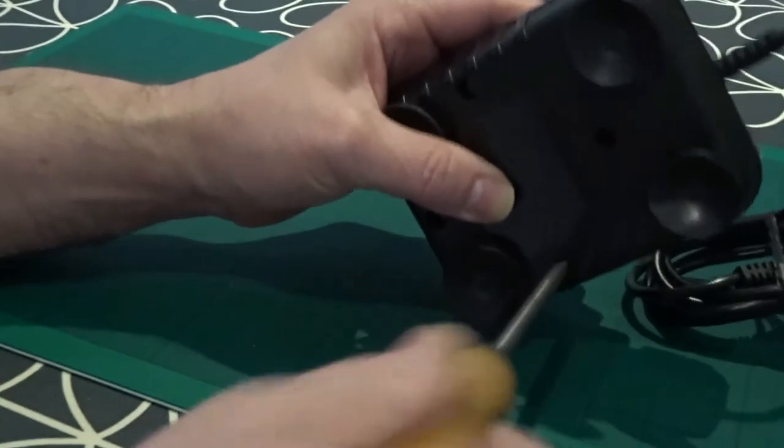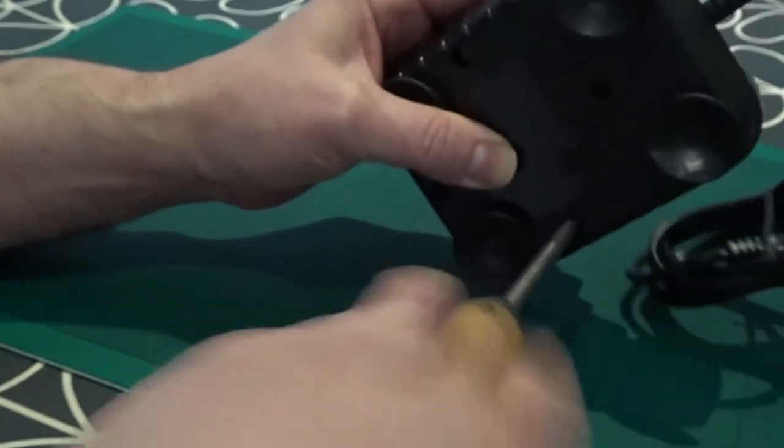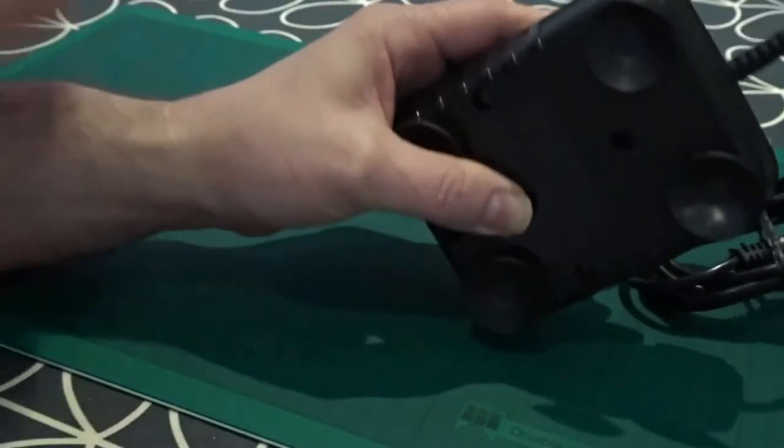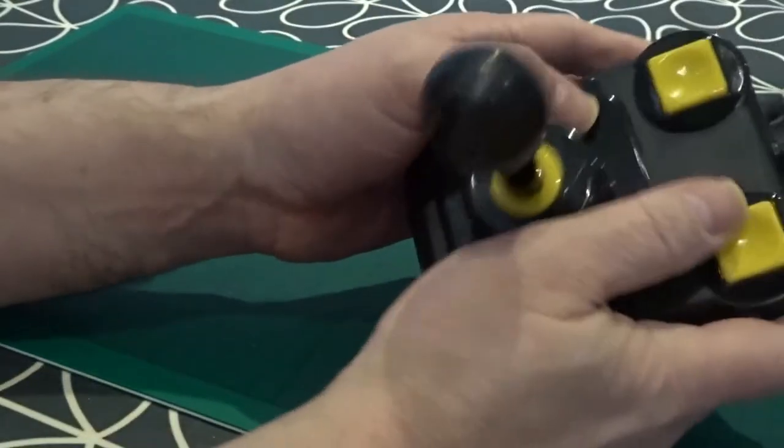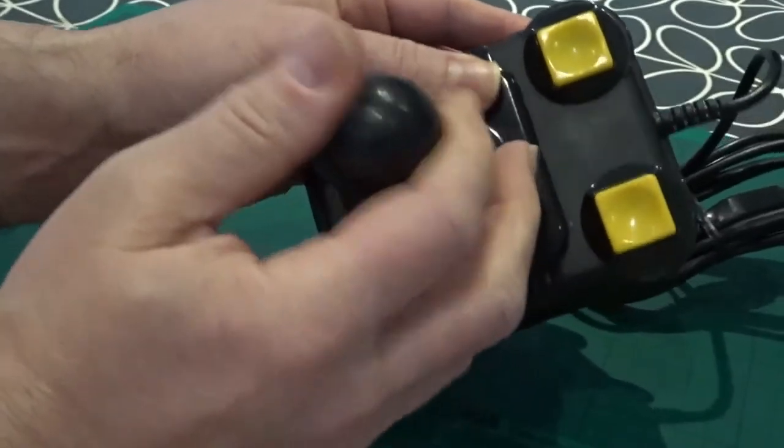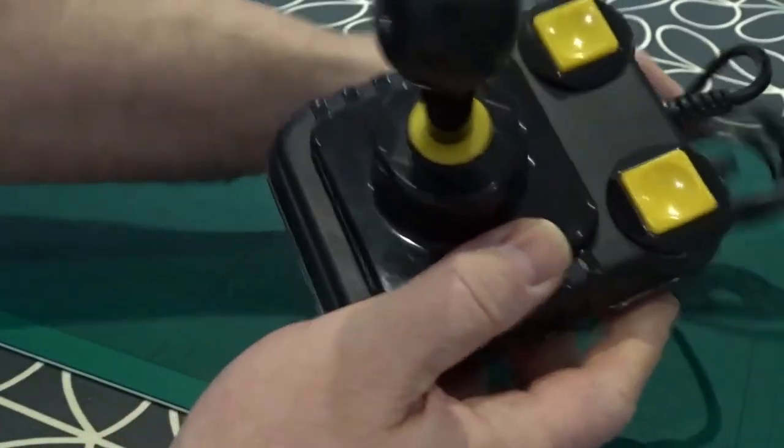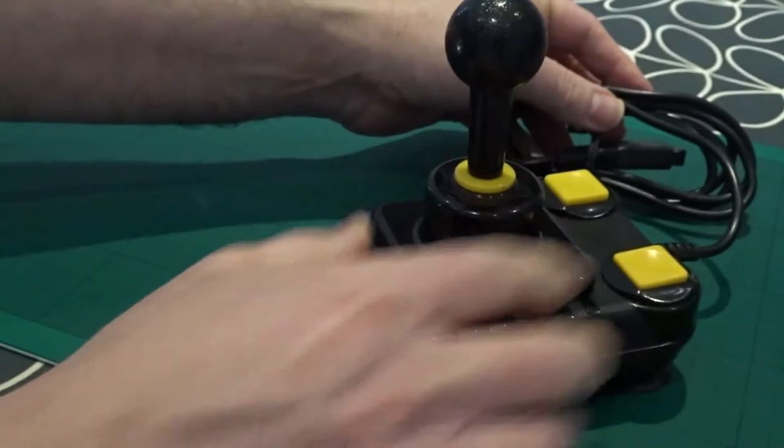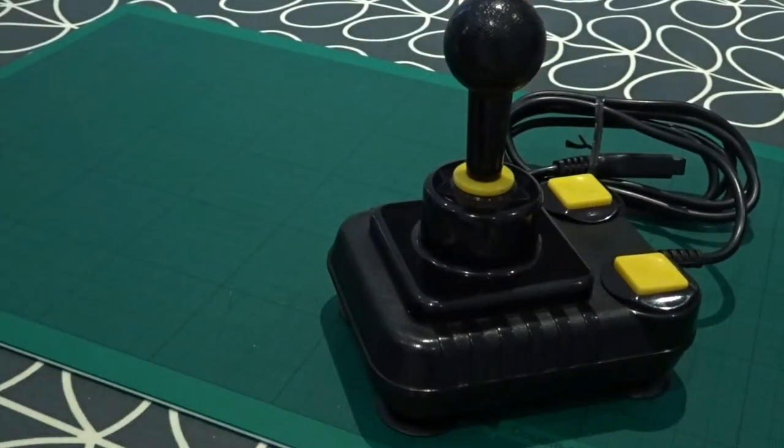That's the last screw done up there. Just do that up. Not too tight. You don't want to over tighten it and break it again. Check all the buttons are working. The joystick buttons, the four micro switches are all working and clicking nicely. And there we go. All nicely cleaned and ready to go.